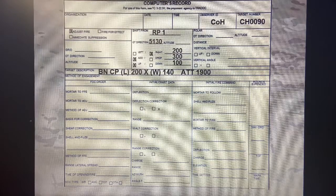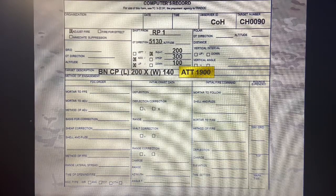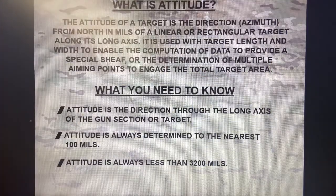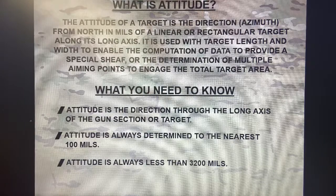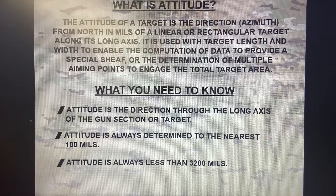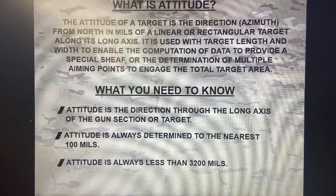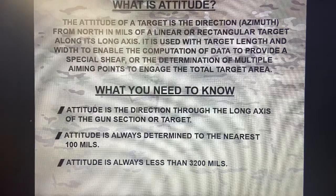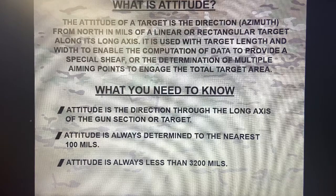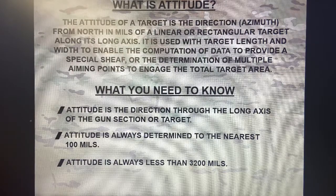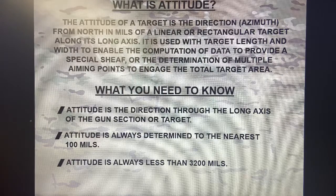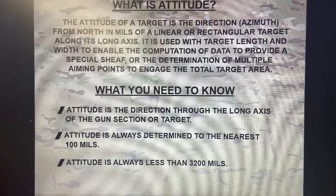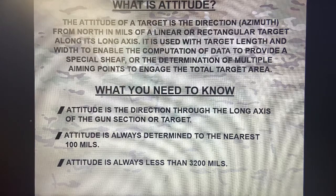Like I said prior, attitude is a new term we've been introduced to. Let me elaborate on what it actually means. The attitude of the target is the direction, or azimuth, from north in mils of a linear or rectangular target along its long axis. It is used with the target length and width to enable computation of data to provide a special sheaf or determination of multiple aiming points to engage the total target area. To simplify: all it is is the direction through the long axis of the gun section or target.